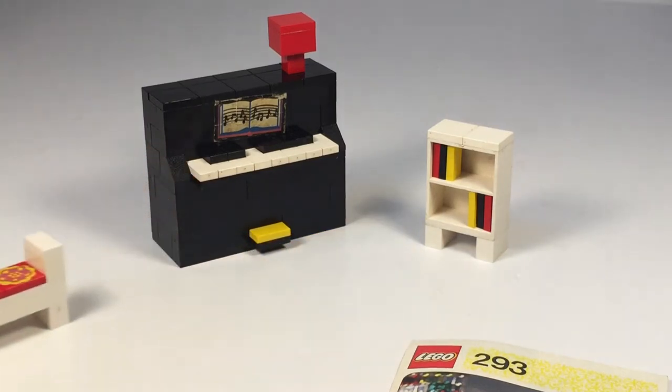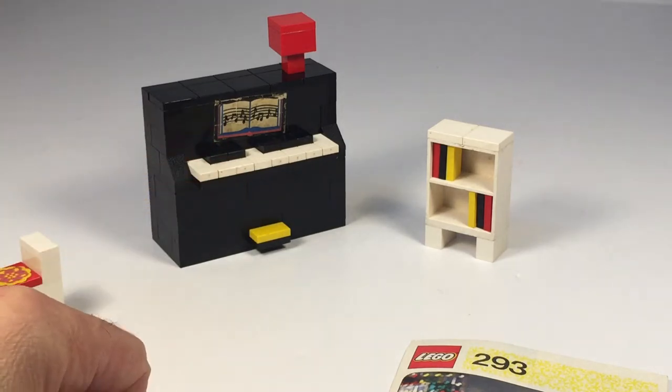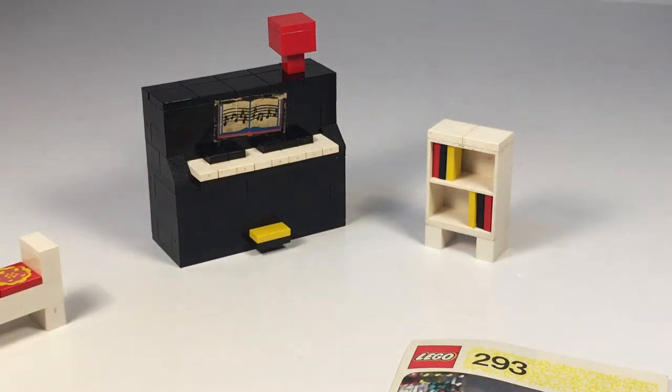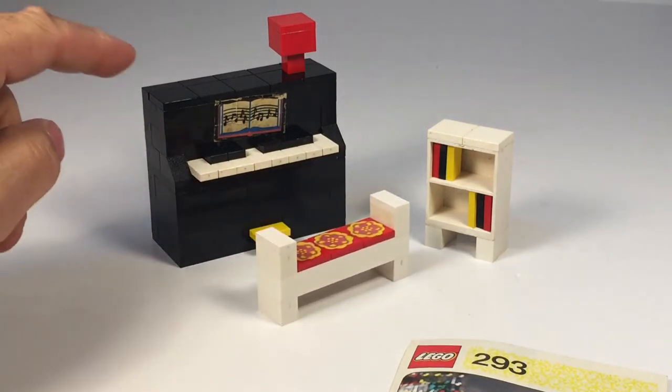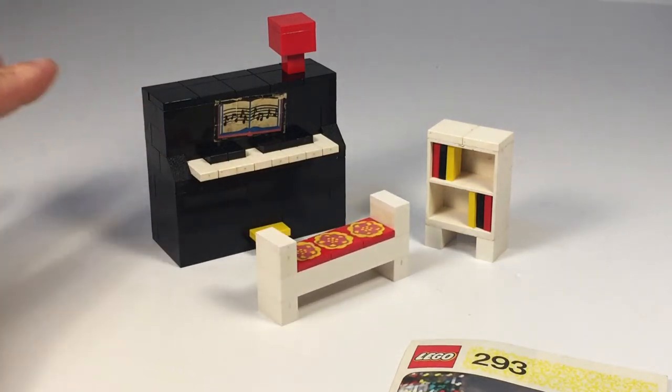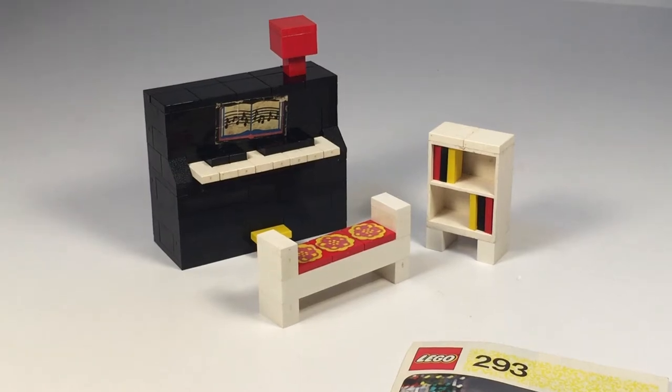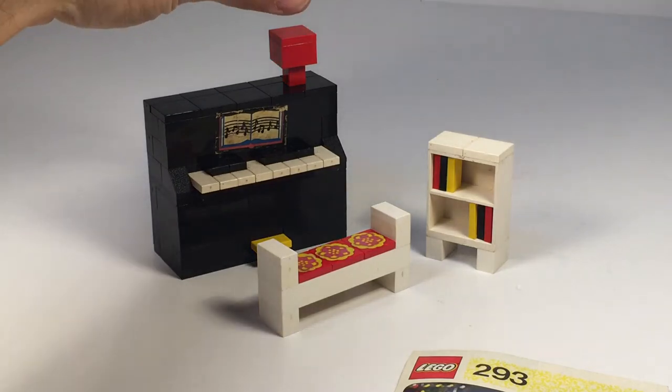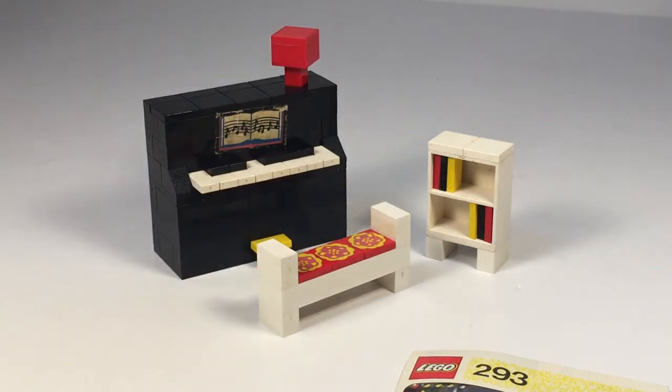So you got those on those tiles and then of course the music sheet on the piano. And then these are all tiles there. And these are all the tiles that don't have the groove. So they're hard to take apart even with a brick separator. And this is just a lamp. It's just kind of free floating there.